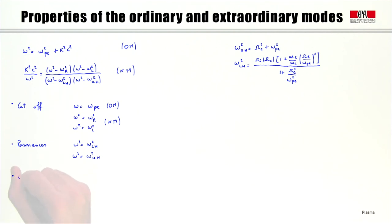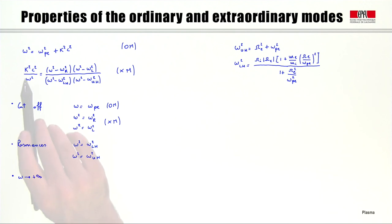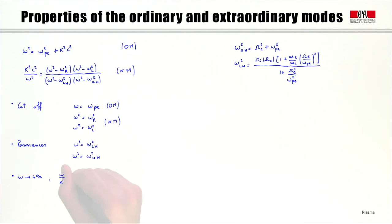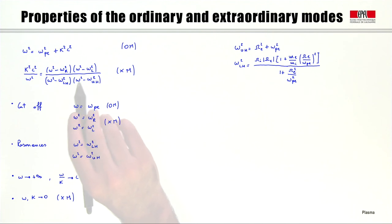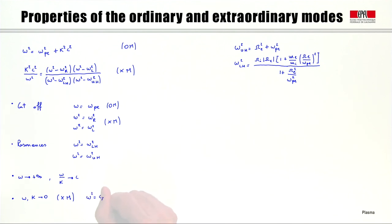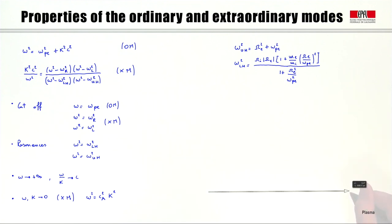The cutoff frequencies — those for which k → 0 with ω ≠ 0 — are: for the ordinary mode, ω = ωpe; and for the extraordinary mode, ω = ωr and ω = ωl. There are no resonances for the ordinary mode, but the extraordinary mode has resonances at the lower and upper hybrid frequencies. For ω → ∞, both modes tend toward ω/k = c. The limit ω, k → 0 is only relevant for the extraordinary mode, giving ω² = cA²k².